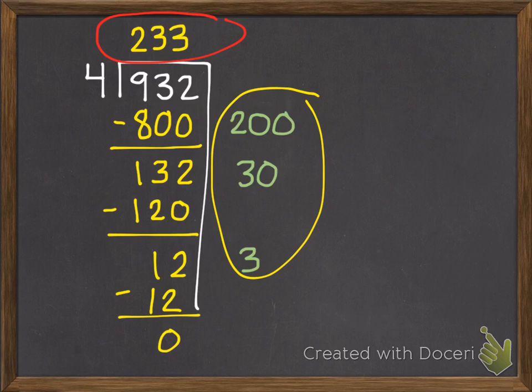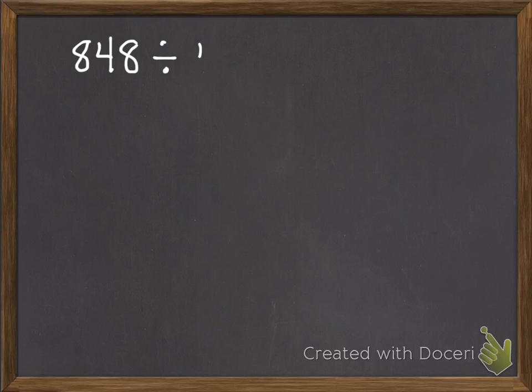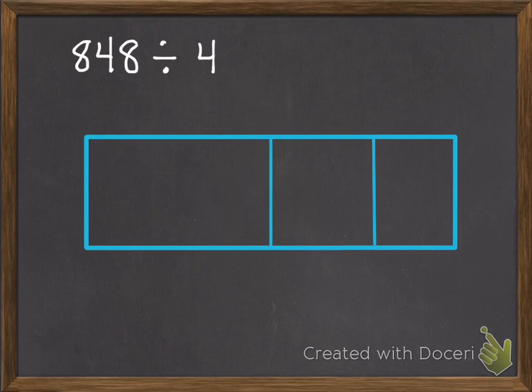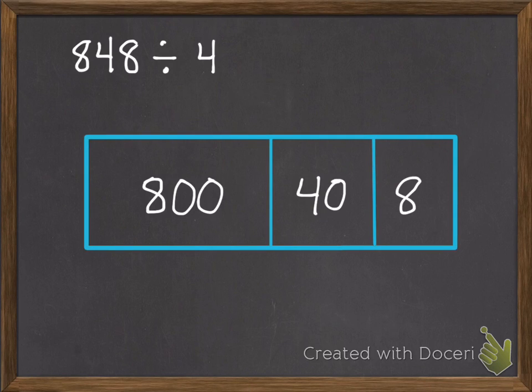So that was the first half of our lesson, but the second half was using the distributive property, which we've used before with multiplication. This will be very similar, just division. So we're going to take that 848 and divide it into 3 different parts: our hundreds, which is 800, our tens, which is 40, and our ones, which is 8. For this lesson we've picked some numbers that go into our divisor very well, so we're going to be dividing this by 4.